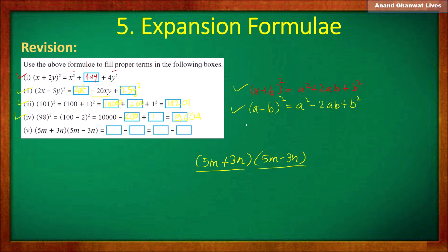We should use the third formula: (a + b)(a − b) = a² − b². Here, consider a = 5m and b = 3n. Therefore, a² − b² gives the square of 5m minus the square of 3n.